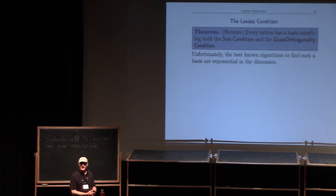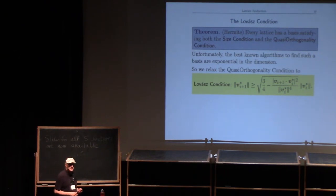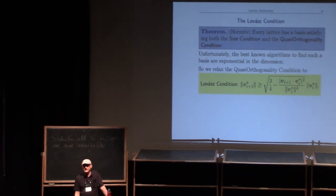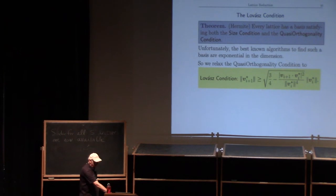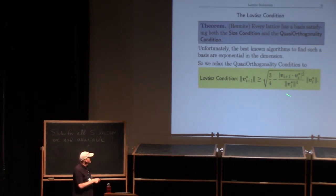Unfortunately, we don't actually know how to find such a basis. Lovász suggested replacing the quasi-orthogonality condition by something just a little bit weaker. If you throw away one term, that's just the quasi-orthogonality condition from the previous page — the (i+1)th Gram-Schmidt vector is bigger than √(3)/2 times the previous one. So it's just a small modification.